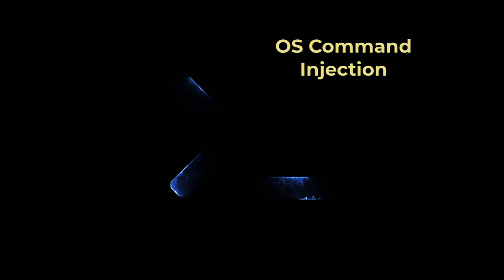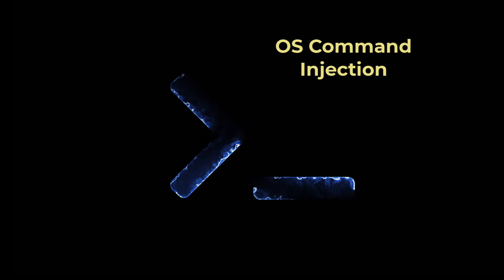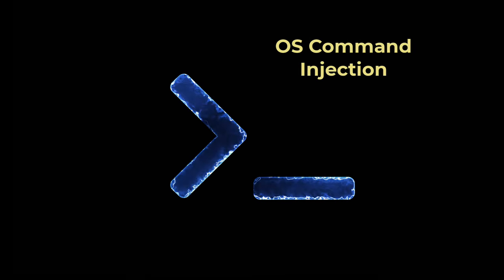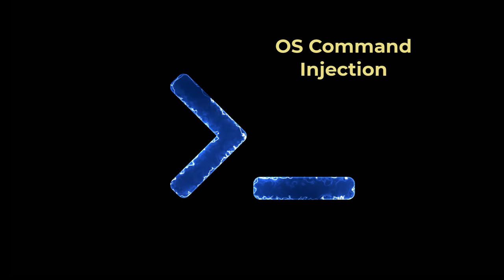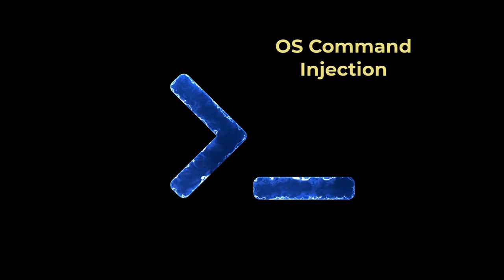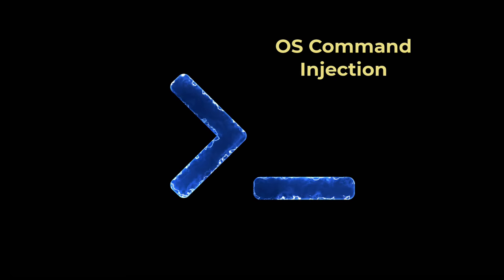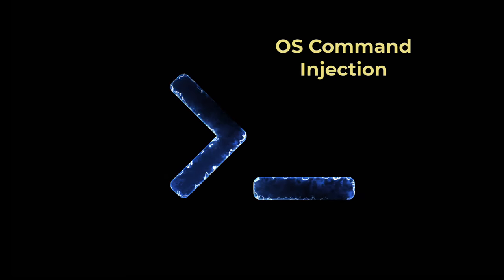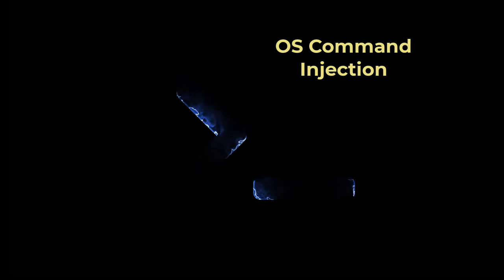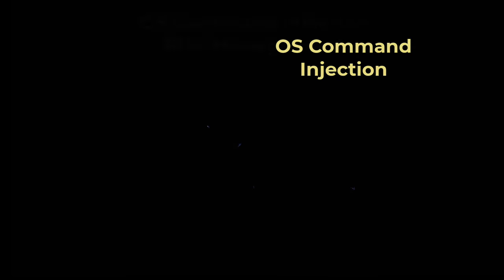OS command injection, also known as shell injection, is a type of security vulnerability that allows an attacker to execute arbitrary operating system commands on the application server. This attack occurs when an application constructs a system command using user input without properly sanitizing or validating that input.